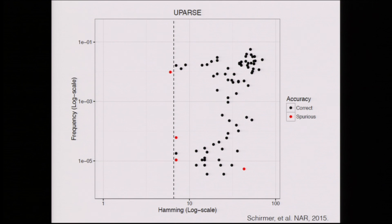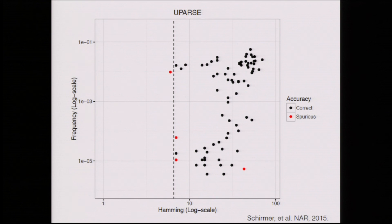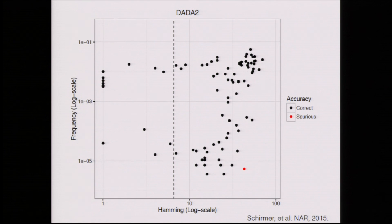The other advantage our method has — comparing now to UPARSE, another OTU method that's more accurate than QIIME and makes fewer mistakes — is that UPARSE doesn't resolve anything within the OTU radius, shown by this dashed line. When we run our algorithm on the same dataset, we lose almost all mistakes and we resolve all of this real biological variation within that 3% OTU radius. Our method uses this error model to achieve both effective resolution of rare variants and fine-scale variation of nearby sample sequences.